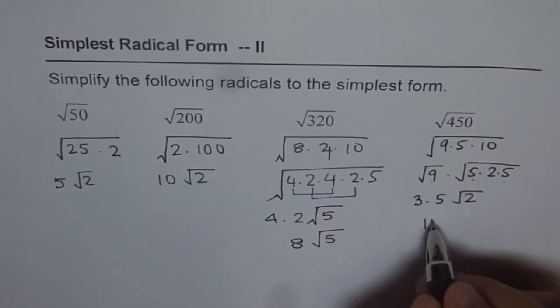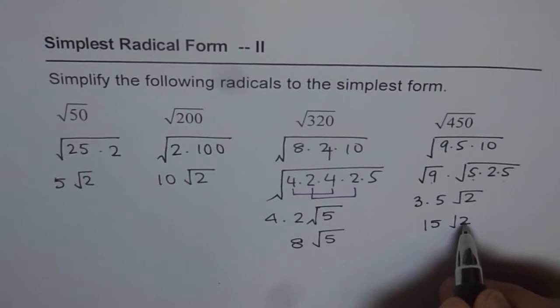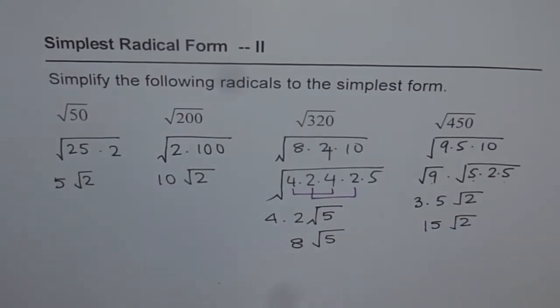So, in a way, the answer is 15 square root of 2. So that becomes the factored form in the simplest possible way. Simplest because now we can see whatever is there in the radical cannot be simplified further since they do not have any factor which is a perfect square.